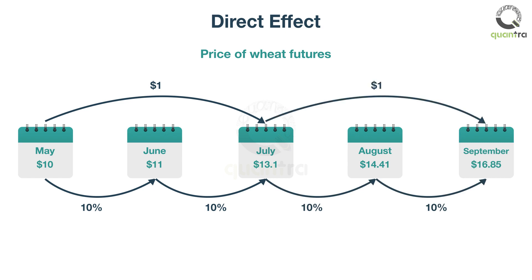So from May to July and from July to September, there is a direct relationship of $1 increase in price. This is a simplified example, and it is easy to identify the pattern or relationship between prices. In real scenarios, these relationships are complicated.